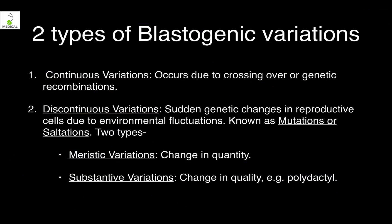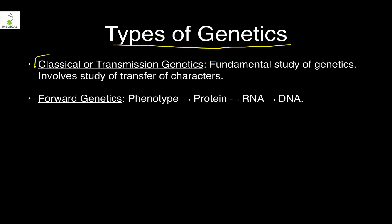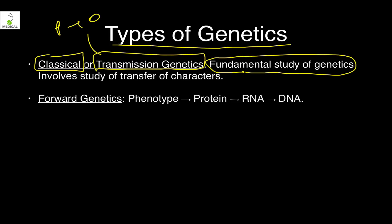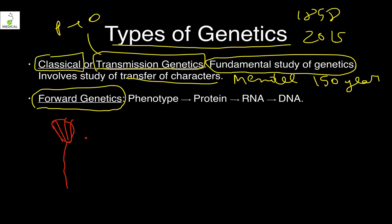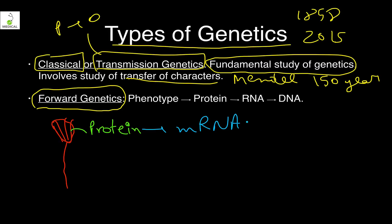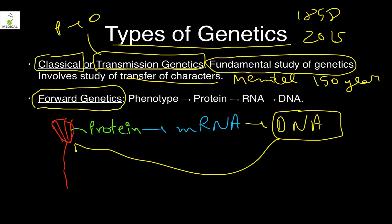There are different types of genetics. Classical genetics, also called transmission genetics, deals with the transmission of characters from parents to offspring. This is the fundamental study proposed by Mendel roughly 150 years ago. Forward genetics: you observe a phenotype, such as a red rose, isolate the responsible protein, find which mRNA codes for it, and finally identify the DNA — working from phenotype to protein to RNA to DNA.